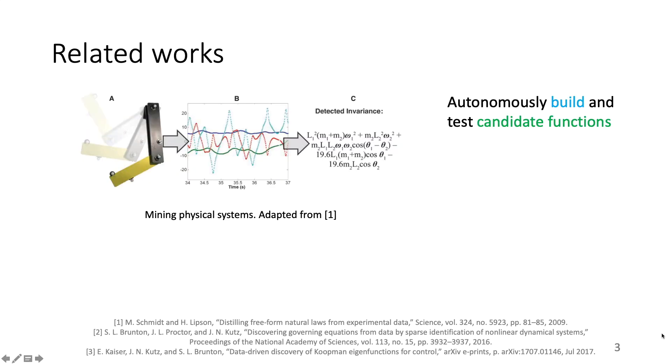Next, I would like to introduce the related works that inspired our ideas. Remarkable progress was made by Schmidt and Lipson in terms of showing that it is possible to distill natural laws from experimental data. That work employed the evolutionary algorithm that autonomously builds and tests candidate functions and selects the meaningful ones.